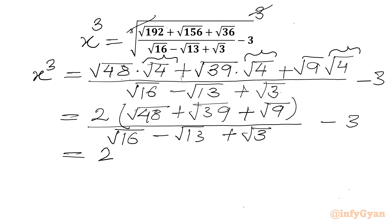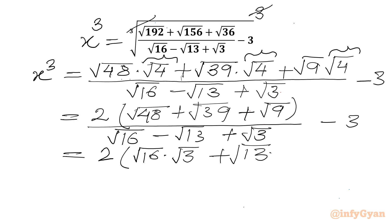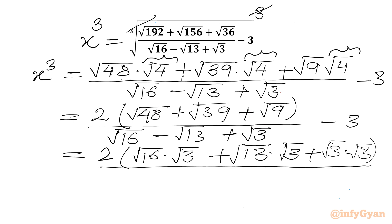Now we can write 2 times root 48. I can write root 16 times root 3 is root 48, then root 13 times root 3 is root 39, and root 3 times root 3 is root 9. Over root 16 minus root 13 plus root 3, then we have minus 3.